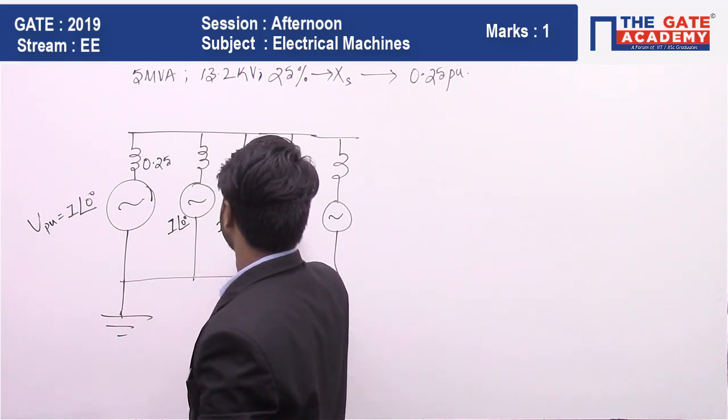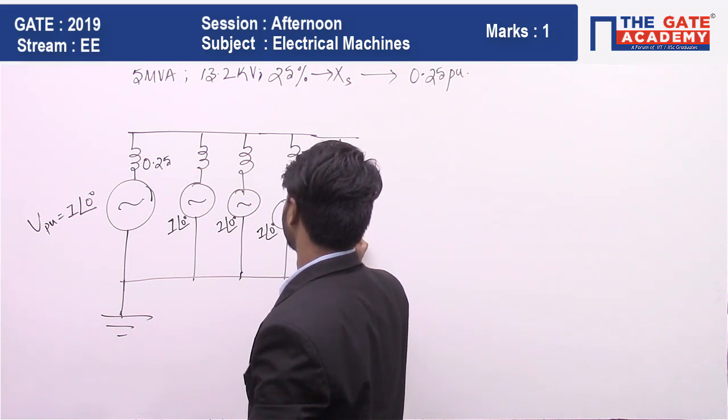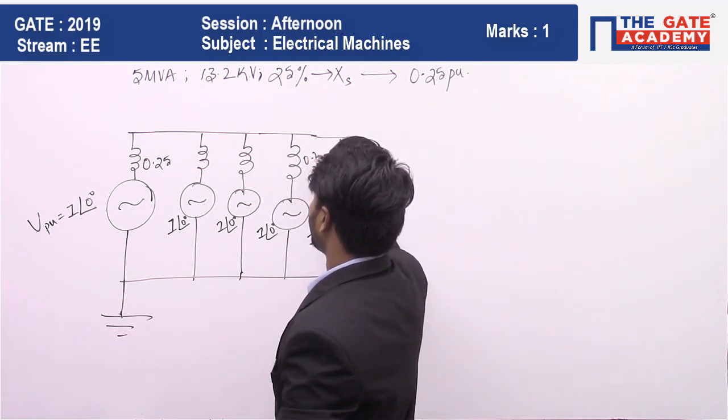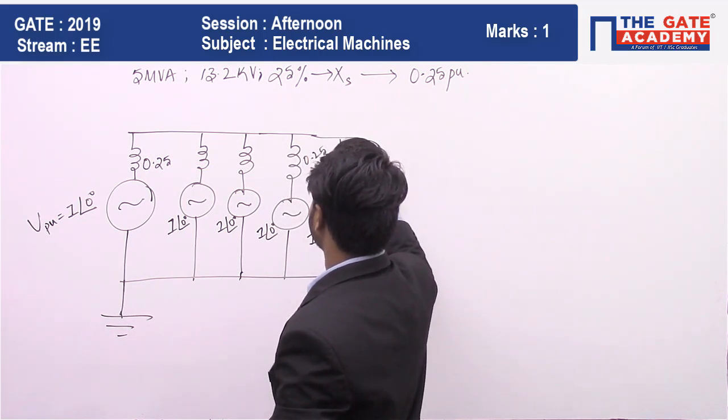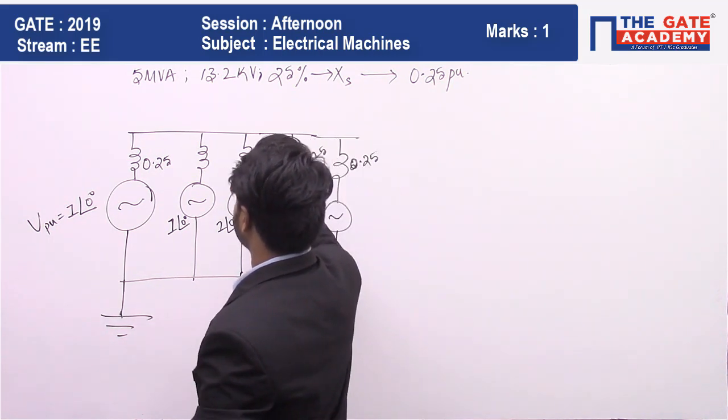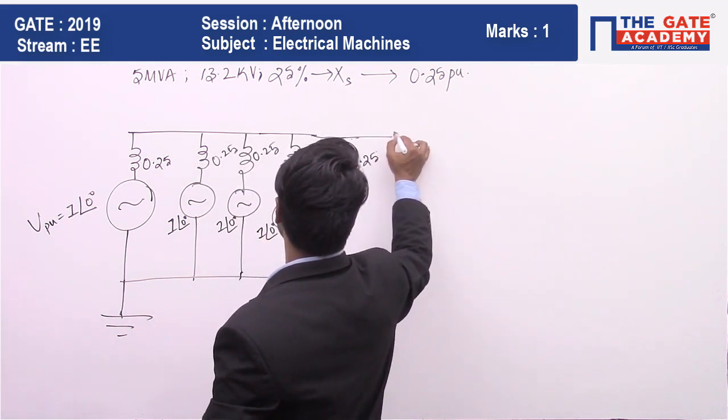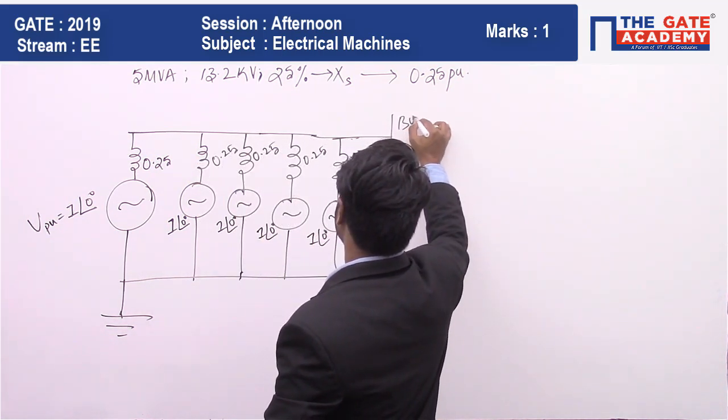1 per unit at angle zero, 1 per unit at angle zero, and 0.25 per unit as its reactance: 0.25, 0.25, 0.25, 0.25.